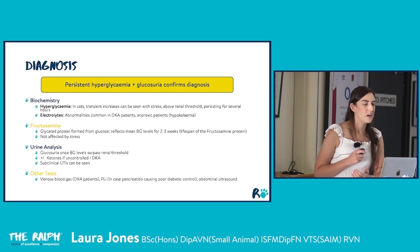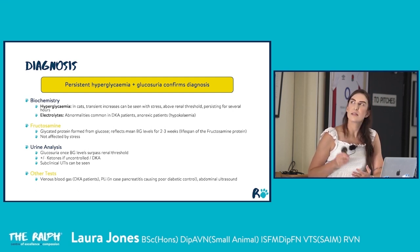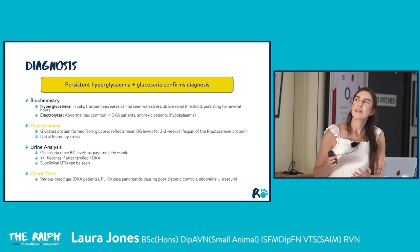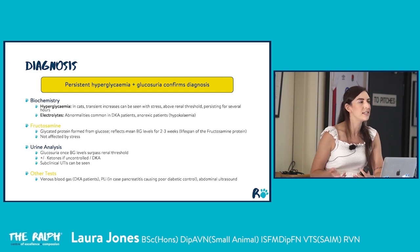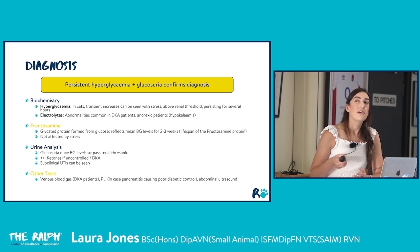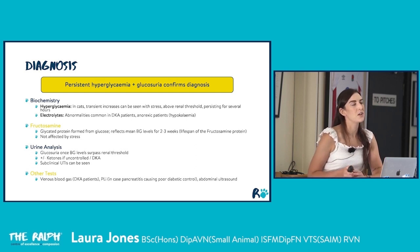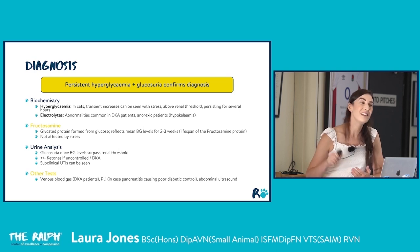Diagnosis of a stable non-ketoacidotic diabetic is based on persistent hyperglycemia and glucosuria. Persistently elevated blood glucose combined with glucosuria confirms the diagnosis. It's important that hyperglycemia is a consistent finding — in cats we often see quite severe acute transient glucose increases associated with stress, so we must differentiate between stress hyperglycemia and true diabetes. Biochemistry may also show electrolyte changes, especially in DKA cases.